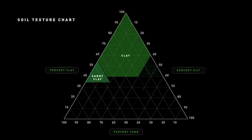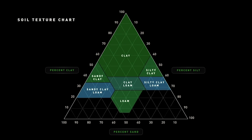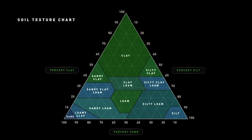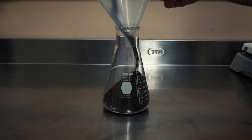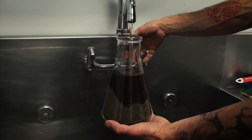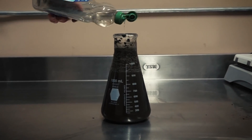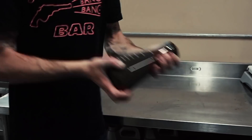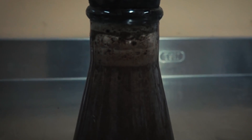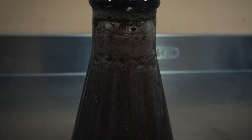Those three components are really important. People at home can actually use a simple jar test with some water and a little bit of surfactant to see how big the layers are and know what their soil composition is. Those layers tell you a lot about how that soil is going to behave — how well it holds moisture, how readily it drains, and whether it's susceptible to compaction.